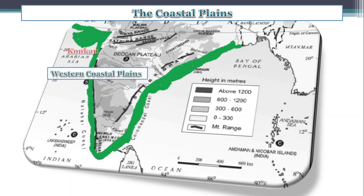Western Coastal Plain stretches from Rann of Kutch to Kanyakumari and it is divided into three sections: first, Konkan Coast; second, Kannad Coast; and third, Malabar Coast.